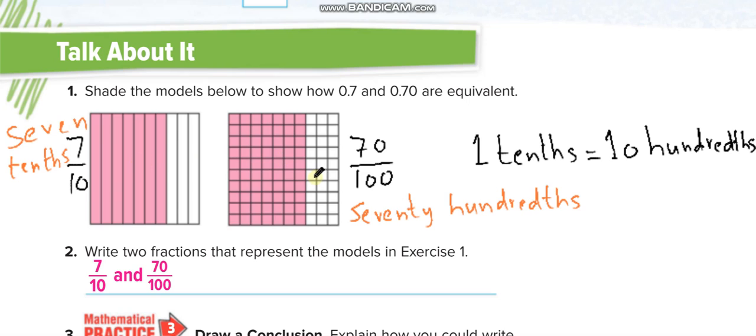Now you can see in the model they both are equal to each other. The same area is shaded, so 0.7 is equal to 0.70. This line shows one tenth, and this one line shows 10 hundredths. You can count, it is 10. So one tenth is equal to 10 hundredths.